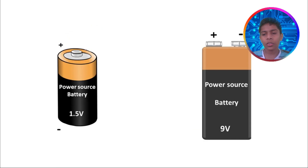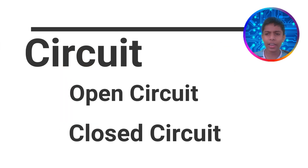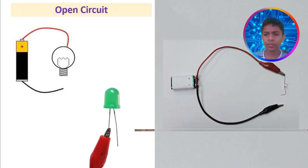The price of batteries depends on the voltage they have. When we talk about circuits, there are two types: the first one is open circuit and the second one is closed circuit.